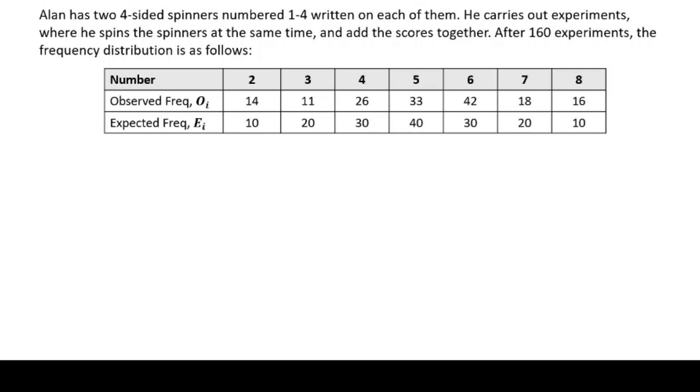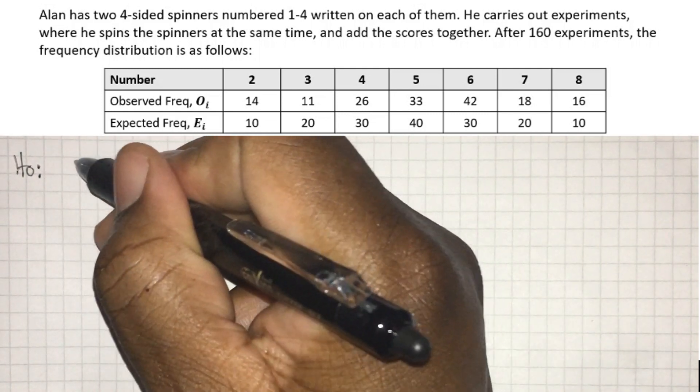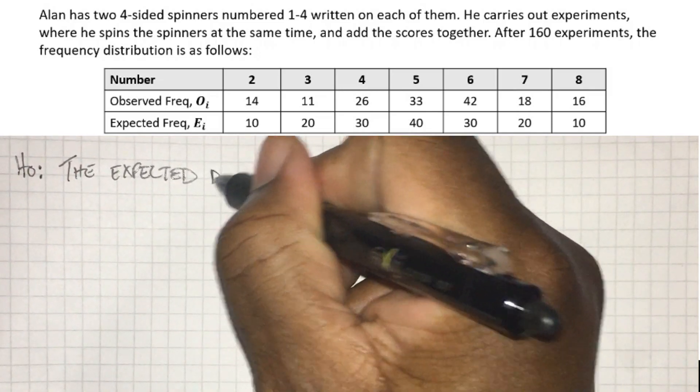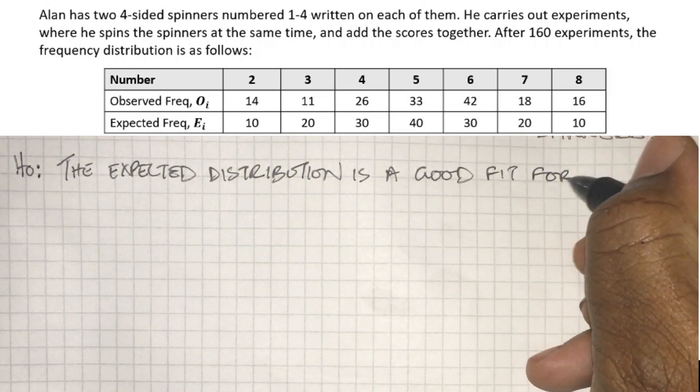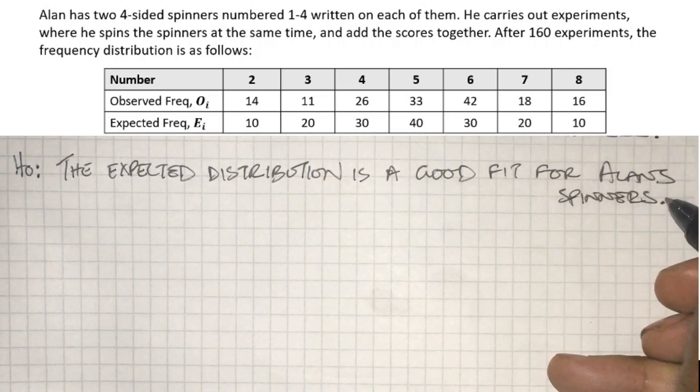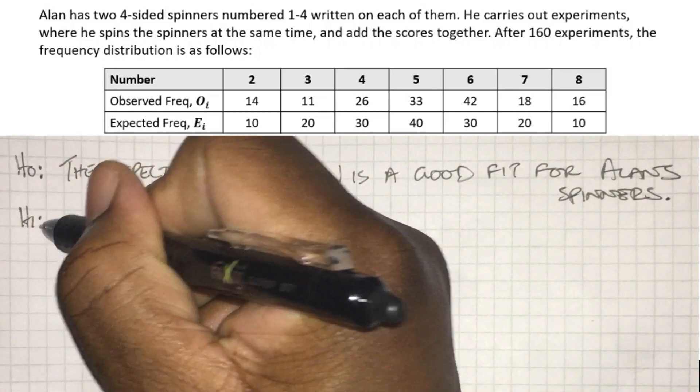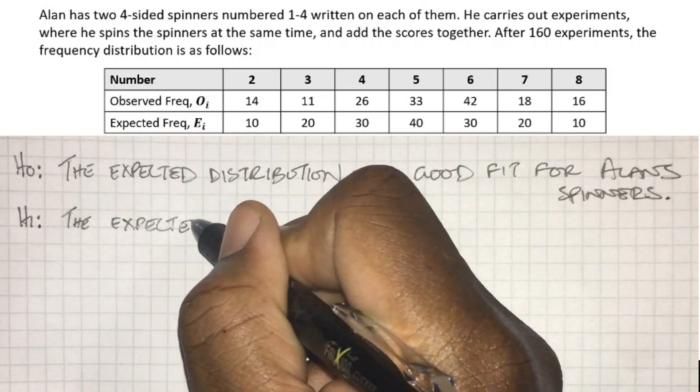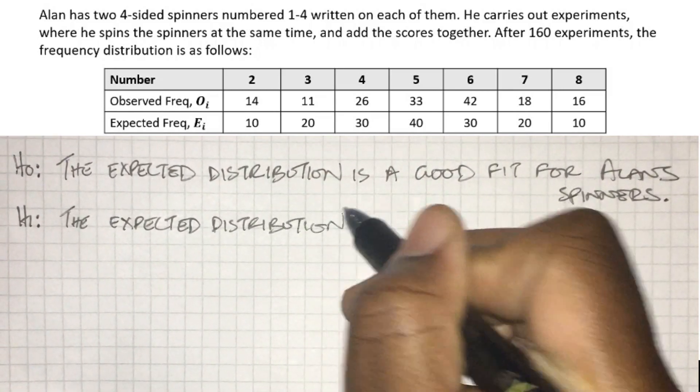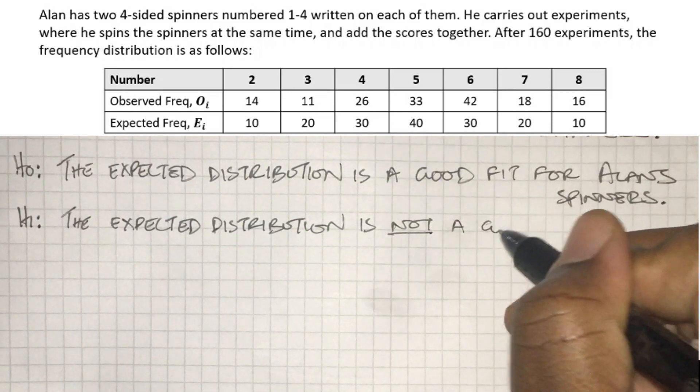We're given the expected frequencies, but we would be able to find them if we made a sample space diagram for the two spinners. The first thing to do is set the hypotheses. The null hypothesis is that the expected distribution is a good fit for Alan's spinner. The alternative hypothesis says that the expected distribution is not a good fit - the differences between expected and observed values are just too much.